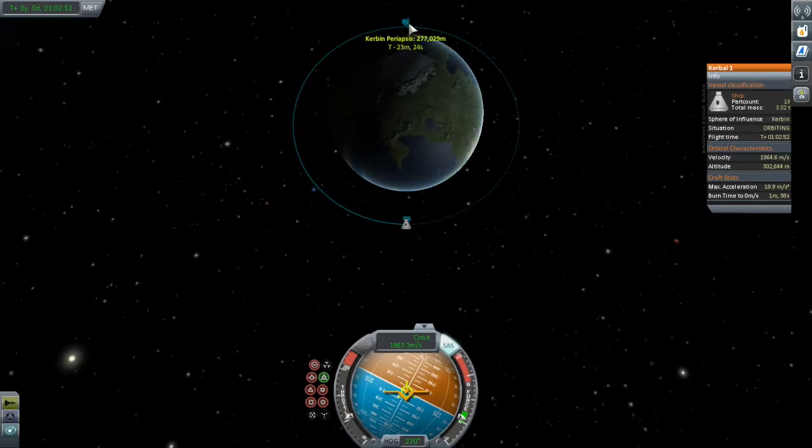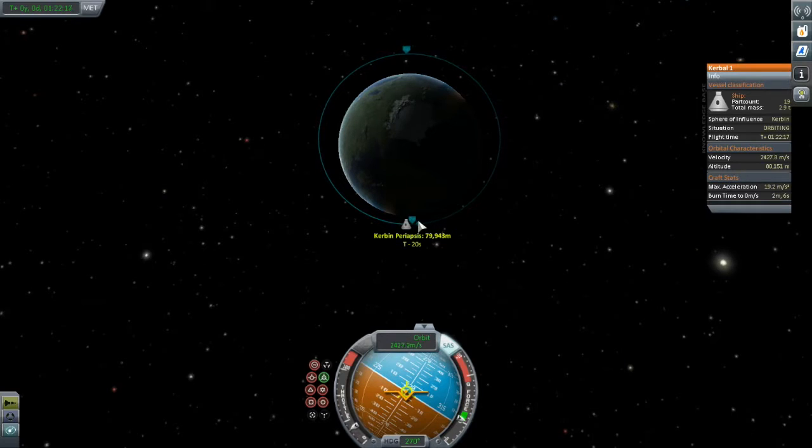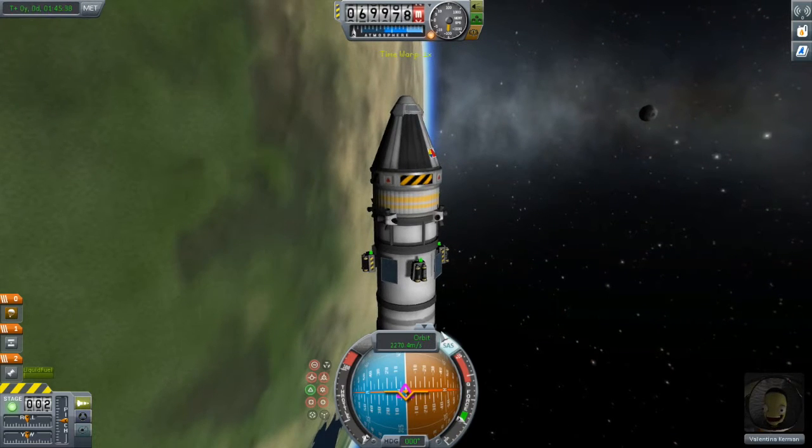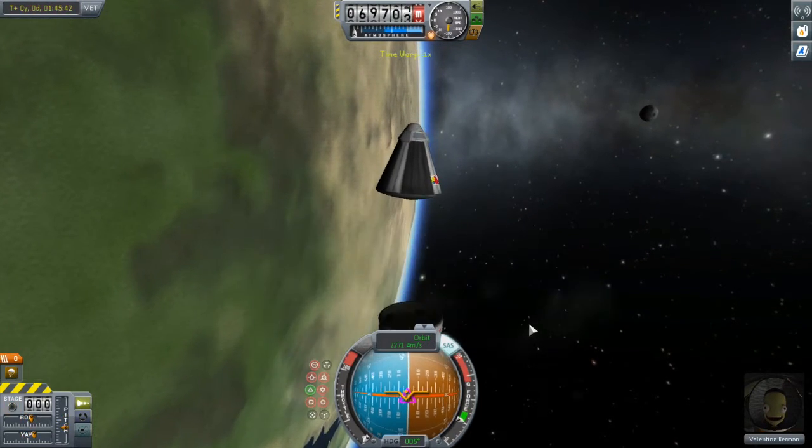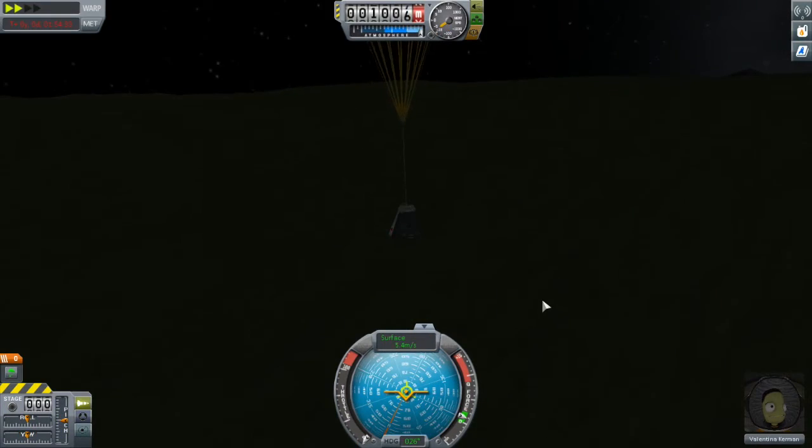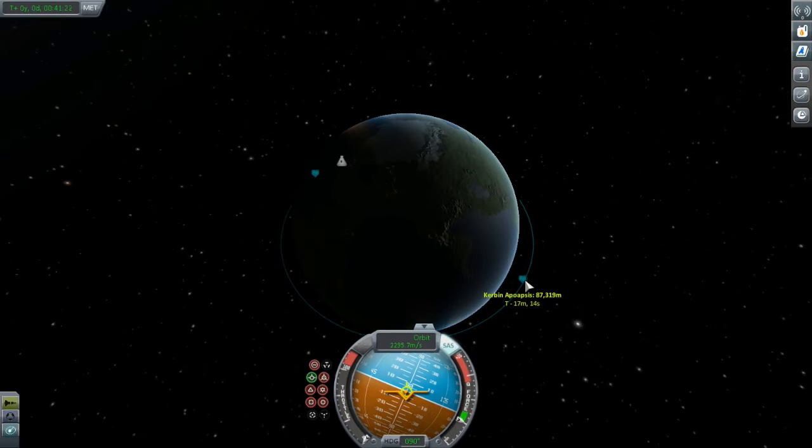And getting Valentina back down to the 80 kilometer orbit is the exact same process in reverse. Except this time, of course, we need to remove energy from our orbit so we will be reducing our velocity by burning retrograde. After that, we'll just do the descent down to the surface, returning Valentina safely so that she is ready for her next mission. Oh, we're going to have fun with this.